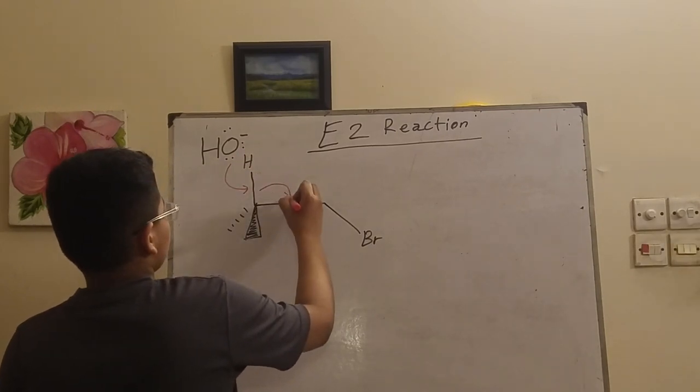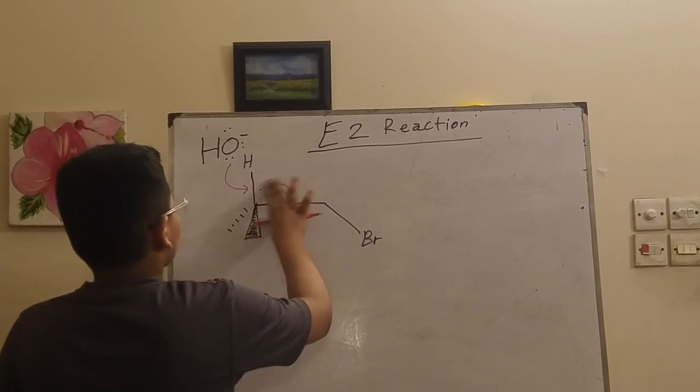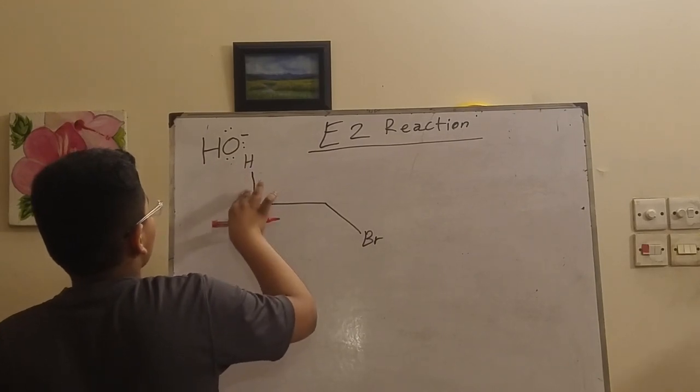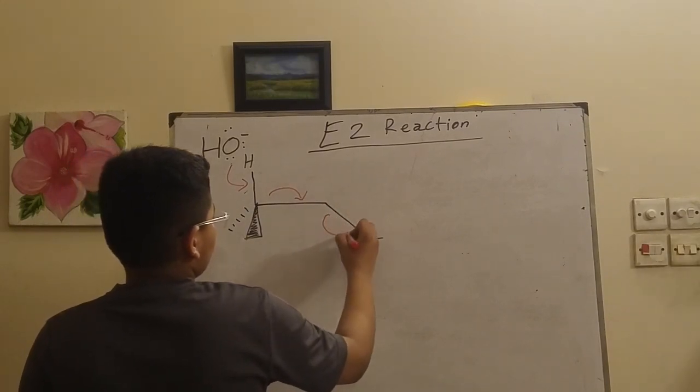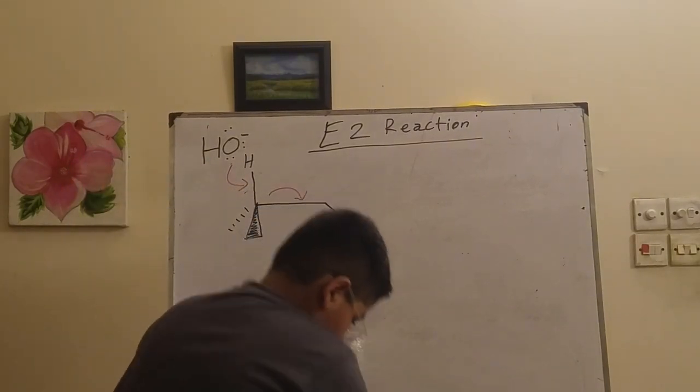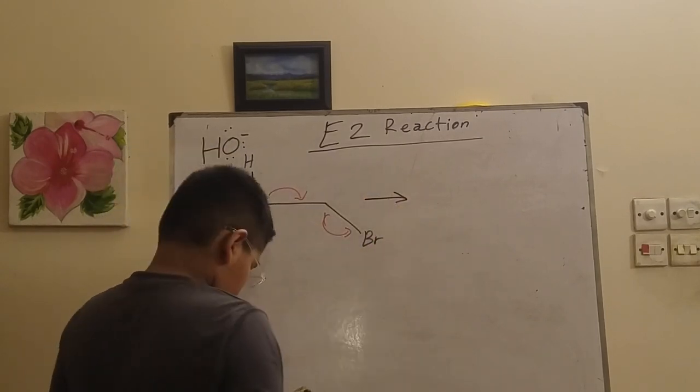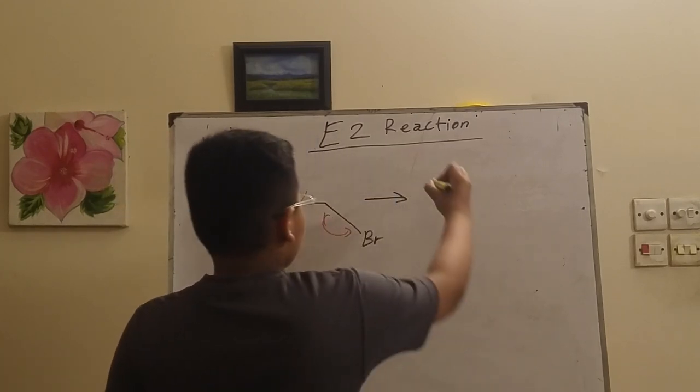First, the hydroxide attacks the hydrogen or proton, and the electrons slowly go to this bond right here, and the carbon realizes it has too many bonds.